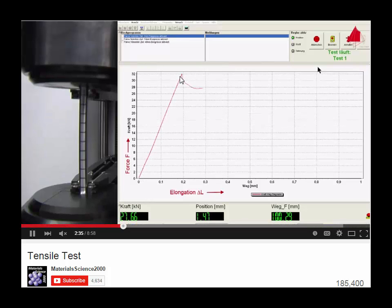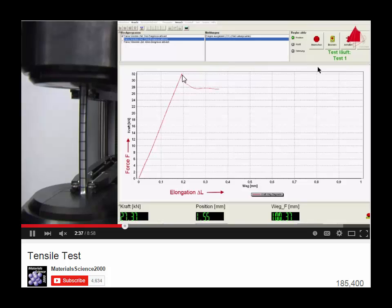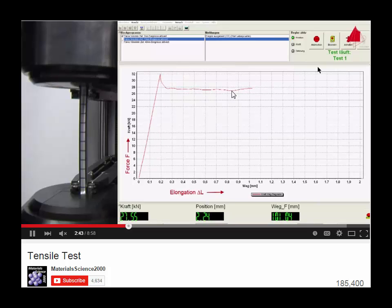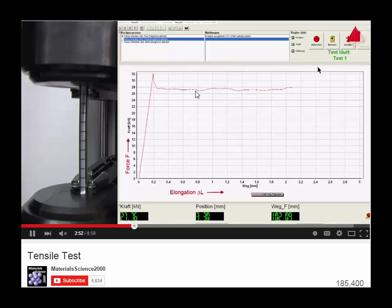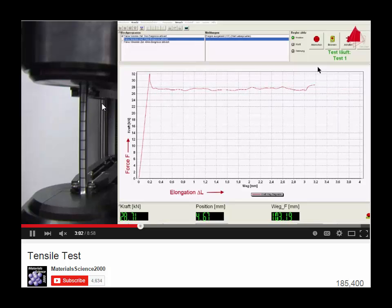But it doesn't stay linear. At some point, that linear behavior comes to an abrupt end. And now you can see a phenomenon we call yielding. That is where under the same load, here at about 28 kilonewtons, the material is elongating. So it is stretching without increasing the load. You can see in the picture on the left that the specimen is elongating slowly.